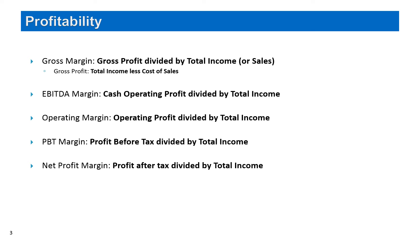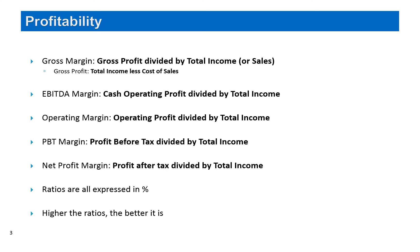We cannot have a standardized profitability ratio across companies or industries because business reality varies from industry to industry. To make the right comparison we can look at our own historical trends, compare with a comparable company, or compare against our own standard, norm, target, or budget. That is how we derive the best insight from any ratio, and the same applies to profitability ratios. Always remember that all profitability ratios are expressed in percentages, and naturally higher the ratio the better it is — but always make the right comparison.